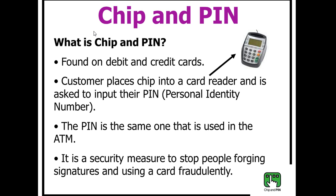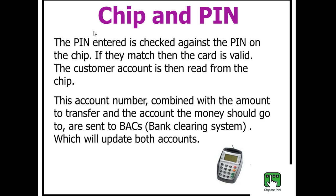Chip and PIN: in England, the only way to identify yourself used to be signing a signature on the back of the card, which was not a very secure method. So the idea of chip and PIN was introduced — instead of just a card with a magnetic strip, you have a card that also contains a chip. Inside this chip is stored your personal identification number. When you insert your card into the chip reader, you type in your PIN. If the PIN you type matches the one stored on the chip, you proceed. If it doesn't match, you get three attempts, and after three wrong attempts the card is automatically locked.